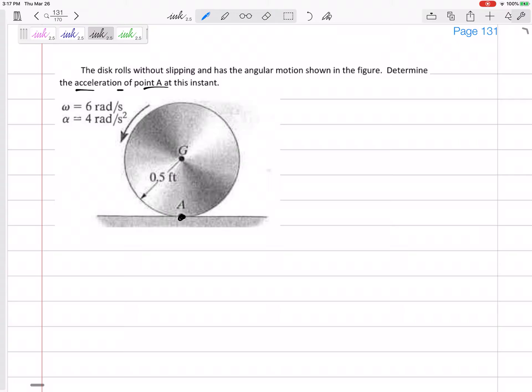And so this is not pure rotation. This is a disk, a rigid body that's not pure rotation, not pure translation. So we can use our relative acceleration method to jump from one point to the next. What point do we know something about? We do know something about point G.